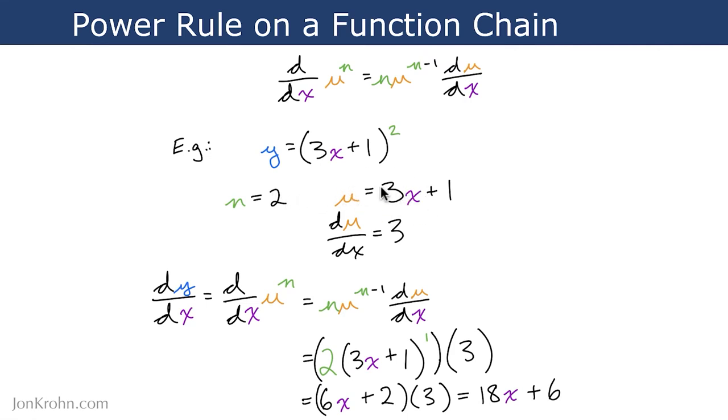So calculating the derivative of 3x plus 1, 1 is a constant, so that becomes 0. 3x, according to the power rule and the constant multiple rule, becomes simply 3.